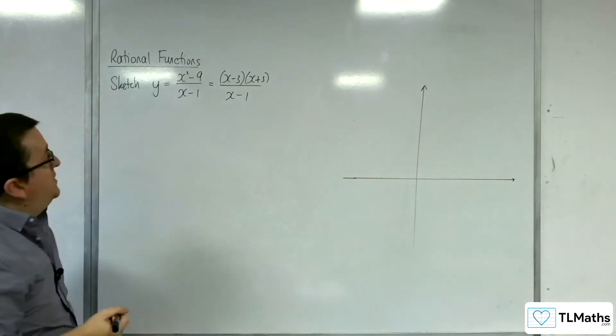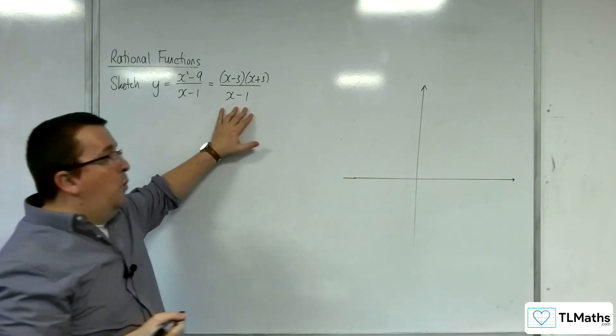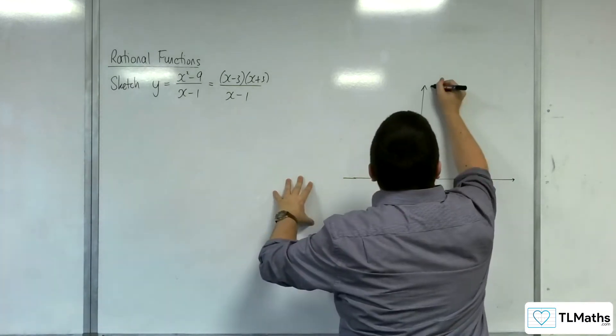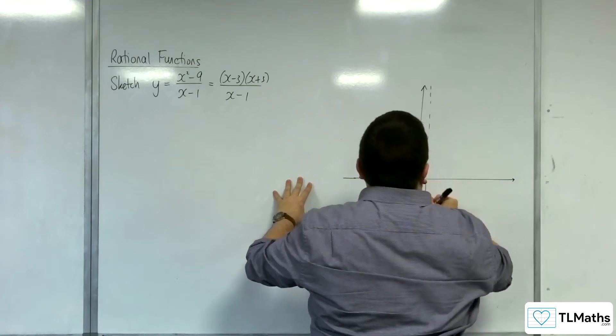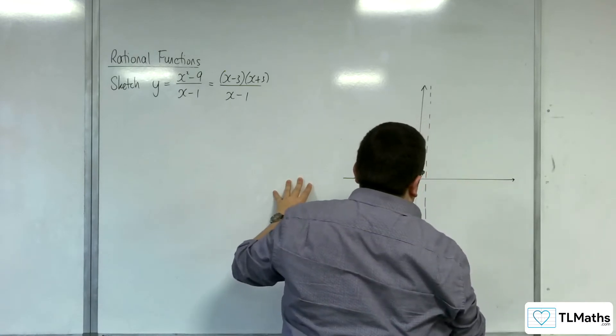Vertical asymptotes first. That's when the denominator is 0, so that's when x equals 1. So x equals 1.